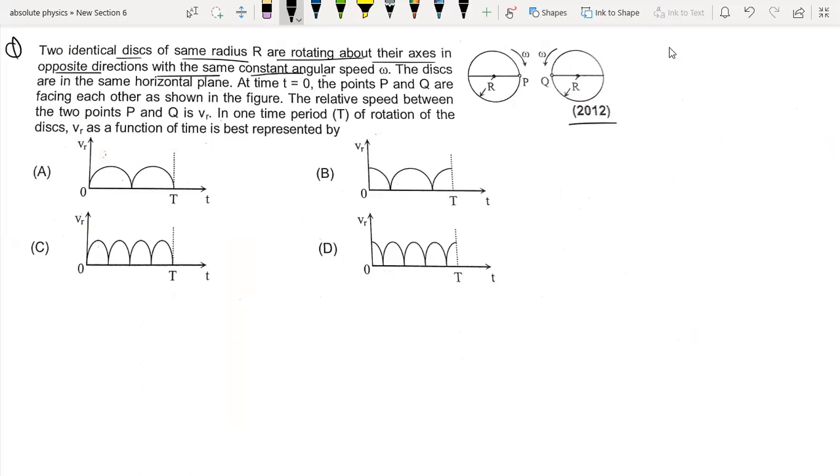The discs are in the same horizontal plane. At t equals zero, the points P and Q are facing each other at the original point. The question asks about the relative speed between the two points P and Q.